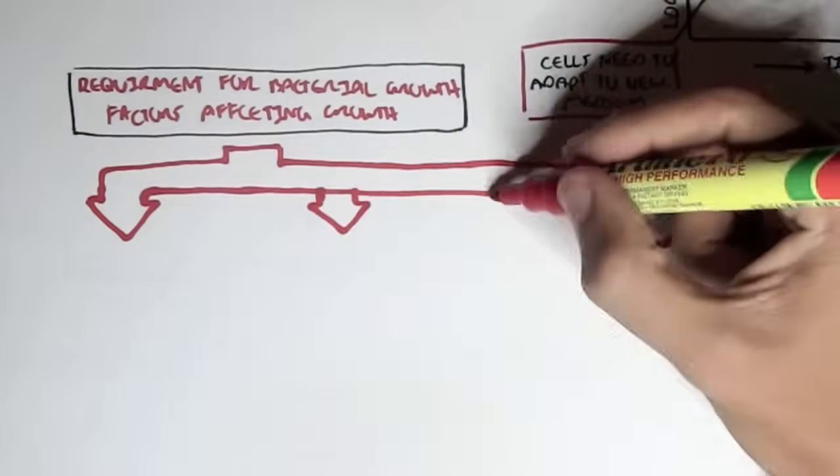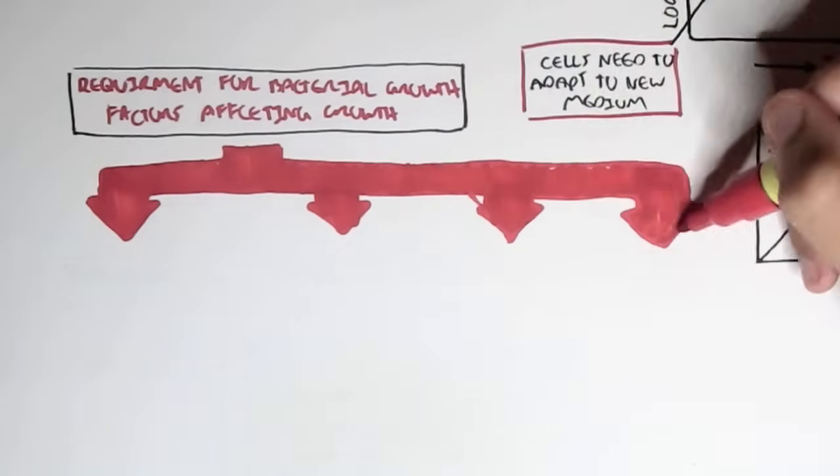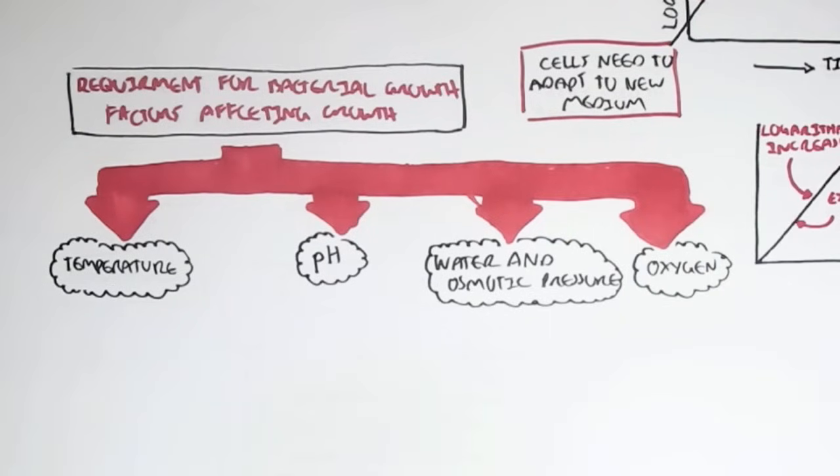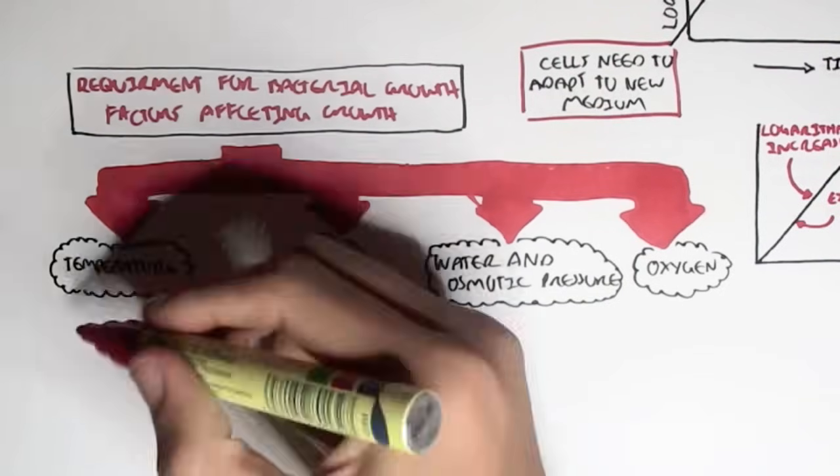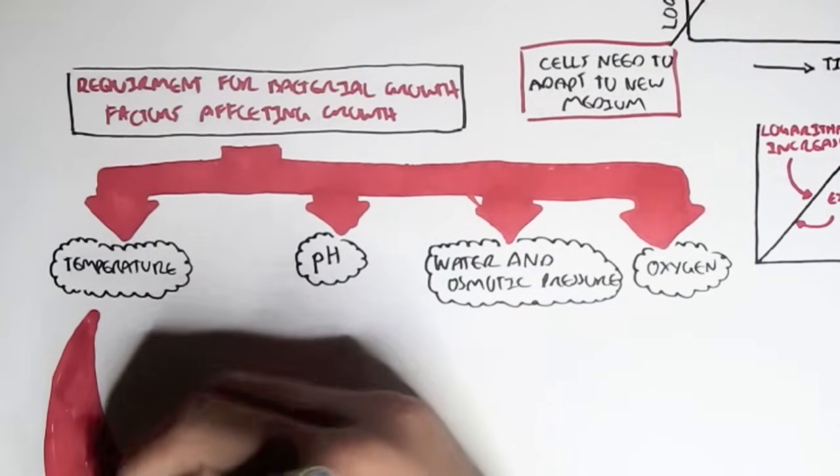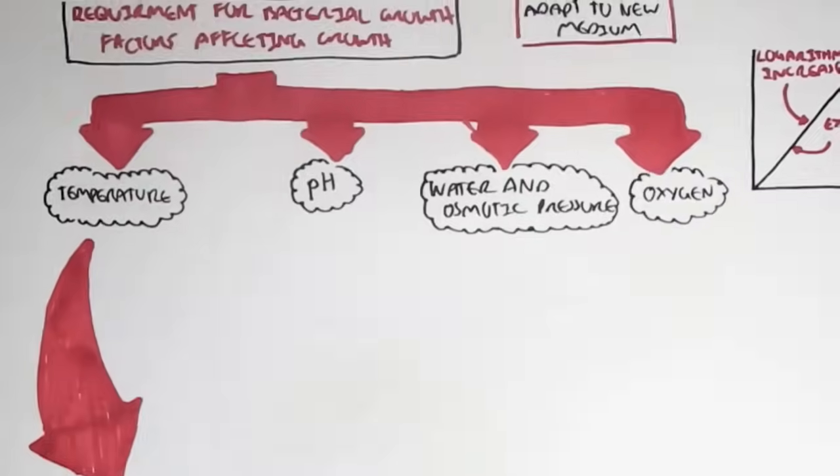The main factors affecting growth that we will look at now are temperature, pH, water and osmotic pressure, and also oxygen. There's also nutritional requirements, which we will not look into in this video. Before we continue, we have to understand that each bacteria is unique in that they require different temperatures, different pH, different oxygen concentrations for growth.